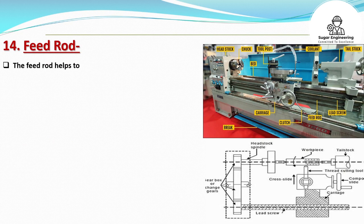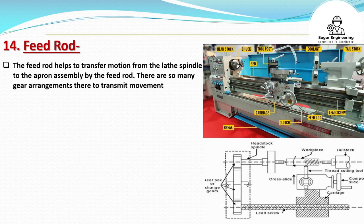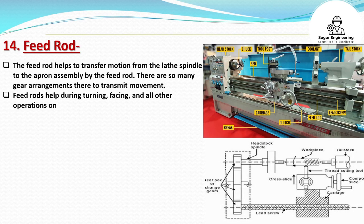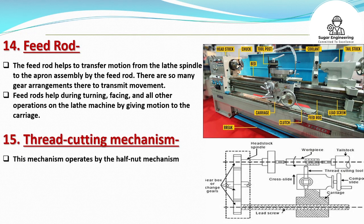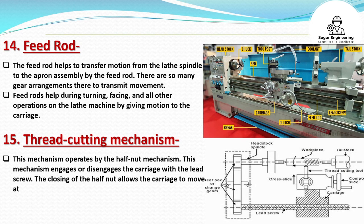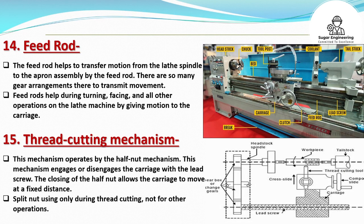The feed rod helps to transfer motion from the lathe spindle to the apron assembly. There are many gear arrangements there to transmit movement. Feed rods help during turning, facing, and all other operations on the lathe machine by giving motion to the carriage. The thread cutting mechanism operates by the half nut mechanism. This mechanism engages or disengages the carriage with the lead screw. The closing of the half nut allows the carriage to move at a fixed distance. The split nut is used only during thread cutting, not for other operations.